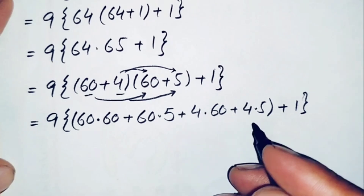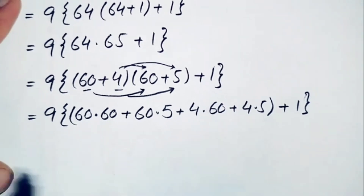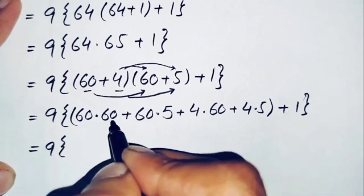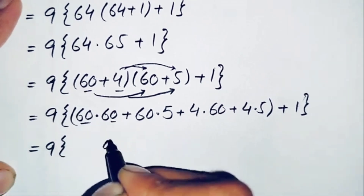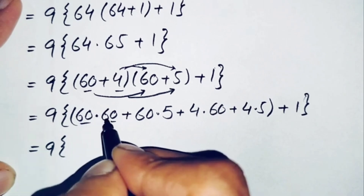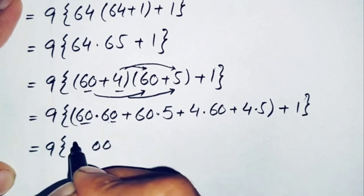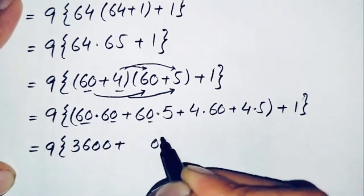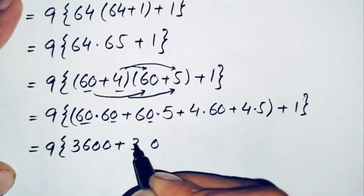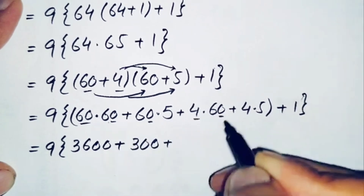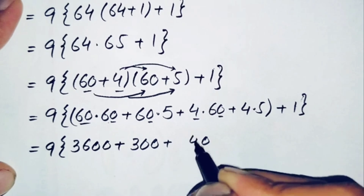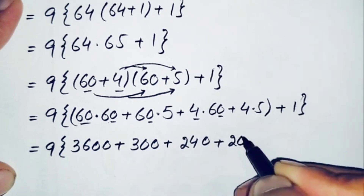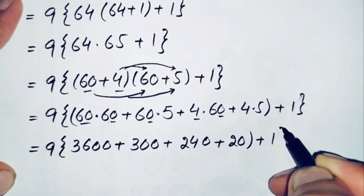Now let's multiply all these numbers inside the parenthesis. 60 times 60 is 3600, plus 60 times 5 is 300, plus 4 times 60 is 240, plus 4 times 5 is 20. So this becomes 9 times (3600 plus 300 plus 240 plus 20 plus 1).